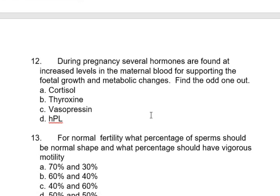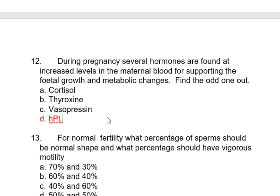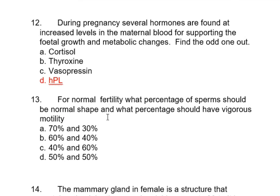During pregnancy, several hormones are found at increased levels in maternal blood to support fetal growth and metabolic changes. HPL — human placental lactogen — is the hormone present only during pregnancy, secreted by the placenta. For normal fertility, 60 percent of sperm should have normal shape and 40 percent should have vigorous motility.